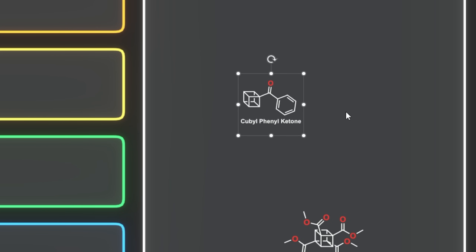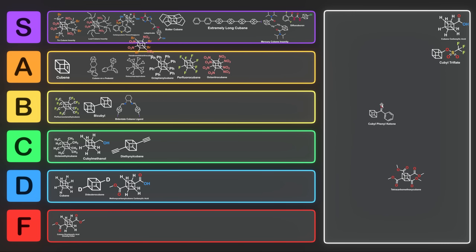Cubylphenyl ketone — I really like this one. It's like the child of two different dynasties: the cubane dynasty and the benzene dynasty. It's beautiful. Cubylphenyl ketone is one of the most beautiful molecules that exists, and for that reason it goes right into S tier.